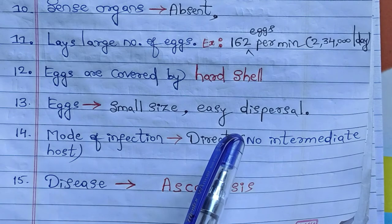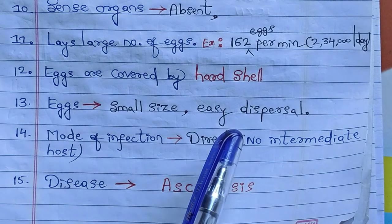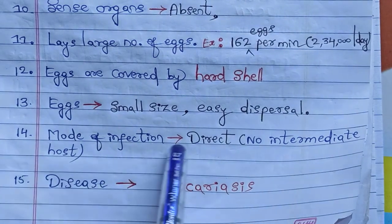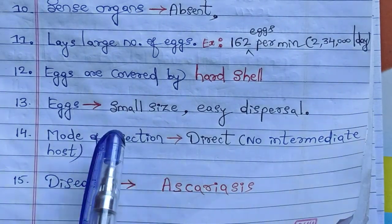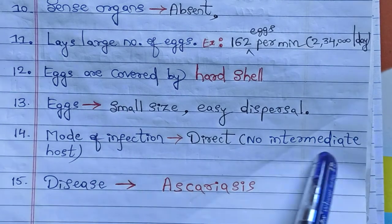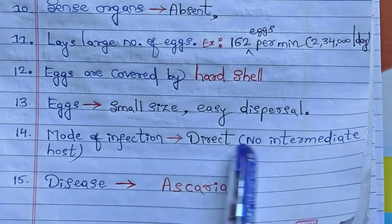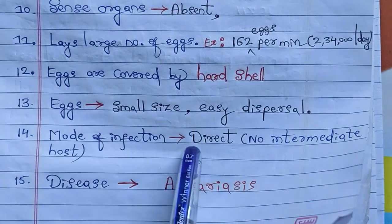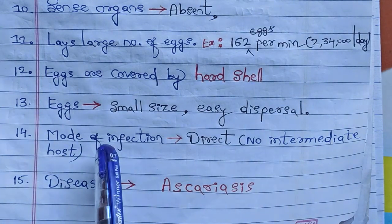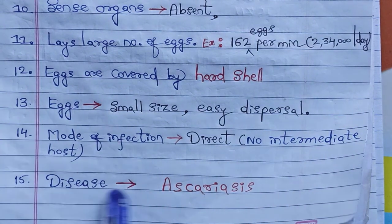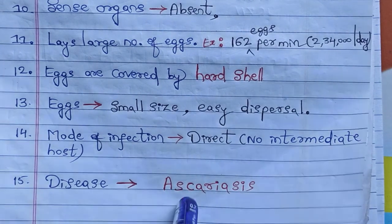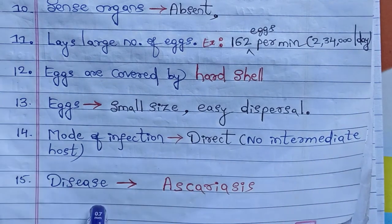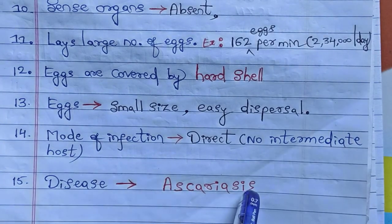For example, in Plasmodium, the female Anopheles mosquito helps in transmission of the parasite from one person to another, requiring an intermediate host or vector. But Ascaris does not require any intermediate host — the mode of infection is direct. The disease caused by Ascaris is called Ascariosis.